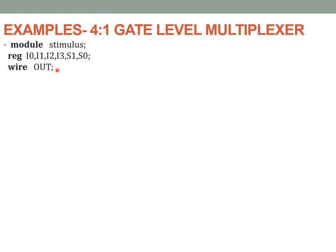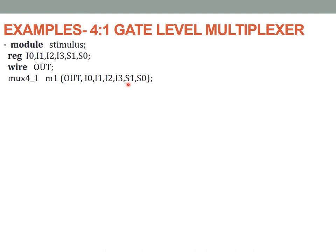The next step is to instantiate the design block. The design block name is mux4_1. We instantiate it with instance name m1, which is compulsory for module instantiations. Since the previous module declared output first, we pass variables in the same order — this is the pass-by-order method. The variables are passed as OUT, I0, I1, I2, I3, S1, S0 to map them correctly.